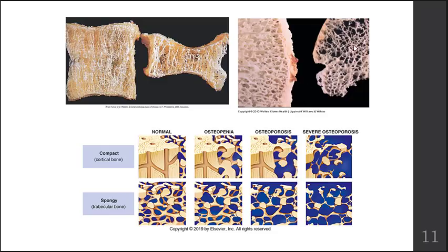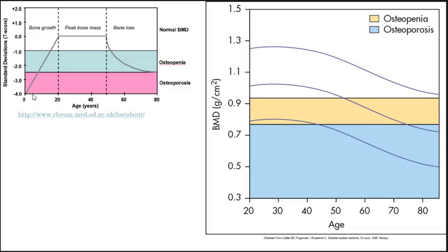Some doctors consider osteopenia to be a precursor to osteoporosis, but not every person diagnosed with osteopenia will develop osteoporosis. If these individuals identify they're osteopenic as early as possible, they can start making healthy changes to prevent osteoporosis. Looking at the top left graph, between ages 0 and 20 there's bone growth and at around age 20 you reach your peak bone mass. It remains relatively level in active, healthy individuals until age 50, where bone loss can begin. In the best case scenario, there's some inevitable bone loss but remaining within normal bone matrix density is important, because dropping into osteopenia predisposes somebody to osteoporosis.